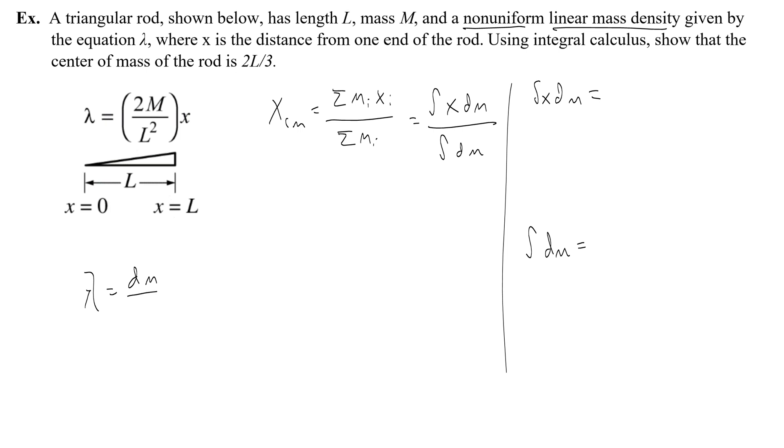It's still equal to the infinitely small change in mass over the infinitely small change in x. Only this time, when I am going to rewrite this for dm equals lambda dx, I have to be careful and replace lambda with the equation that they give me, which would be 2m over l squared times x dx.